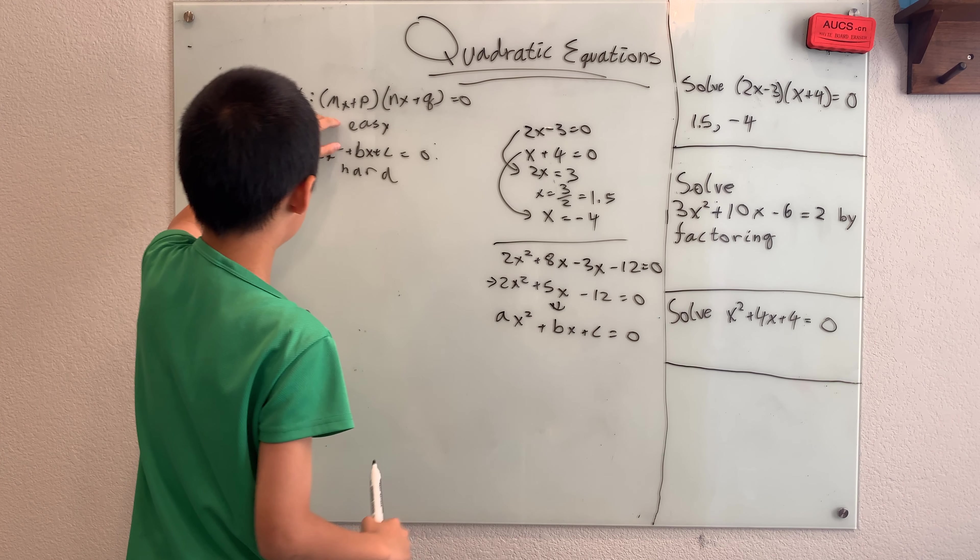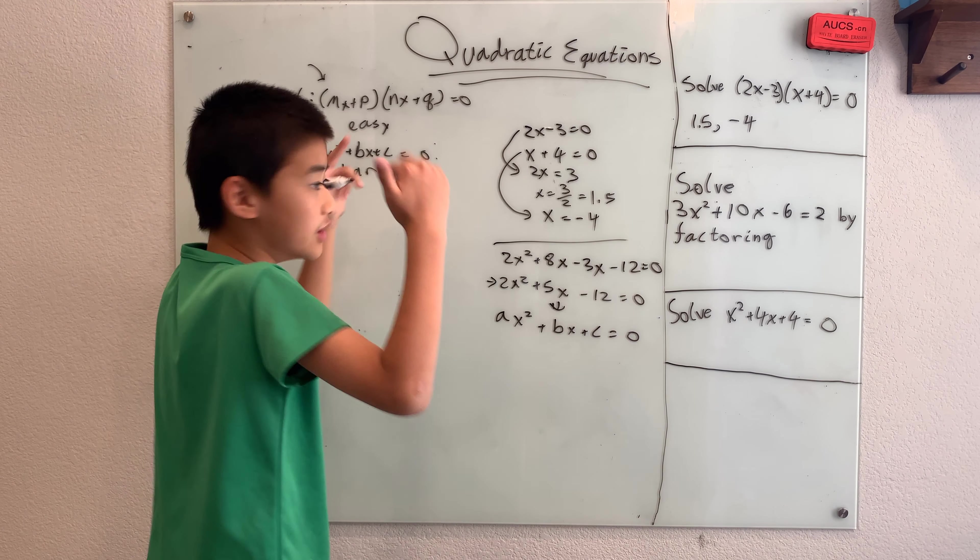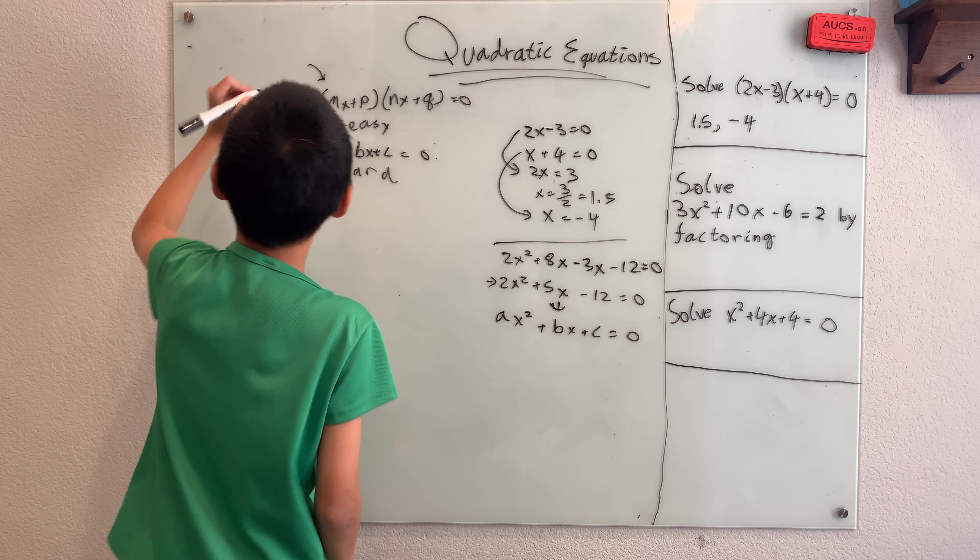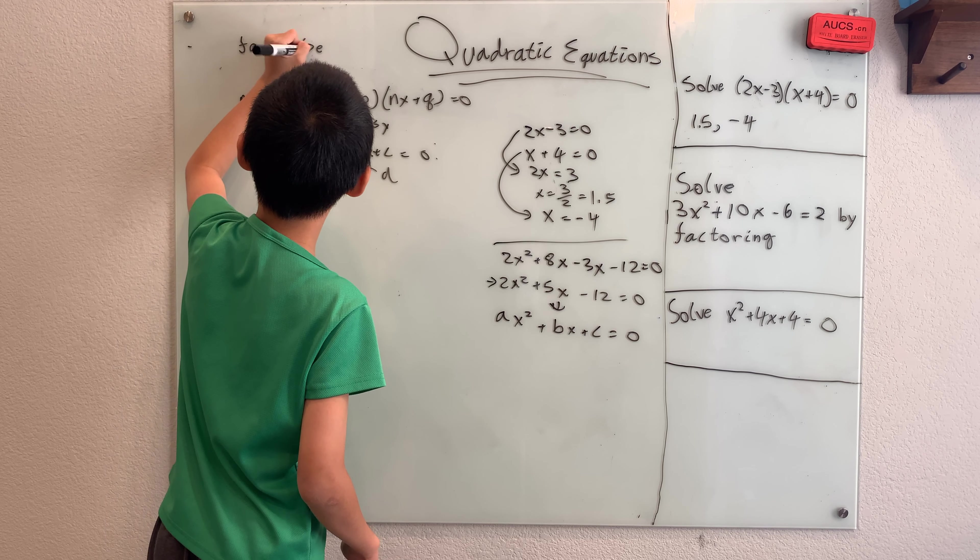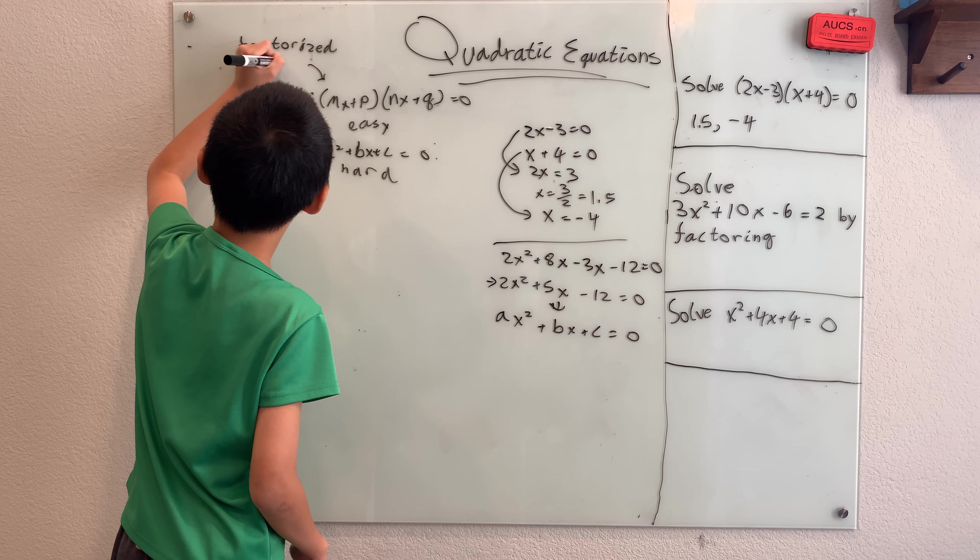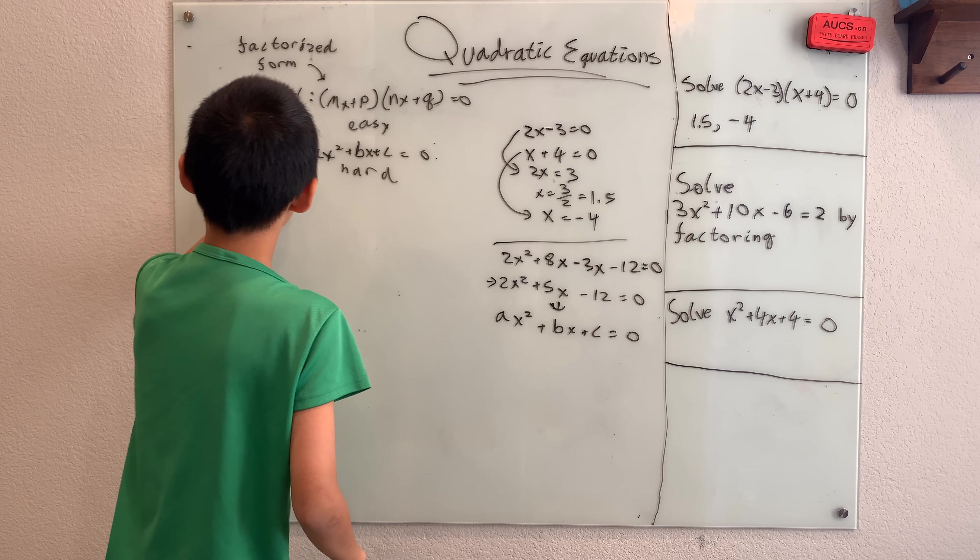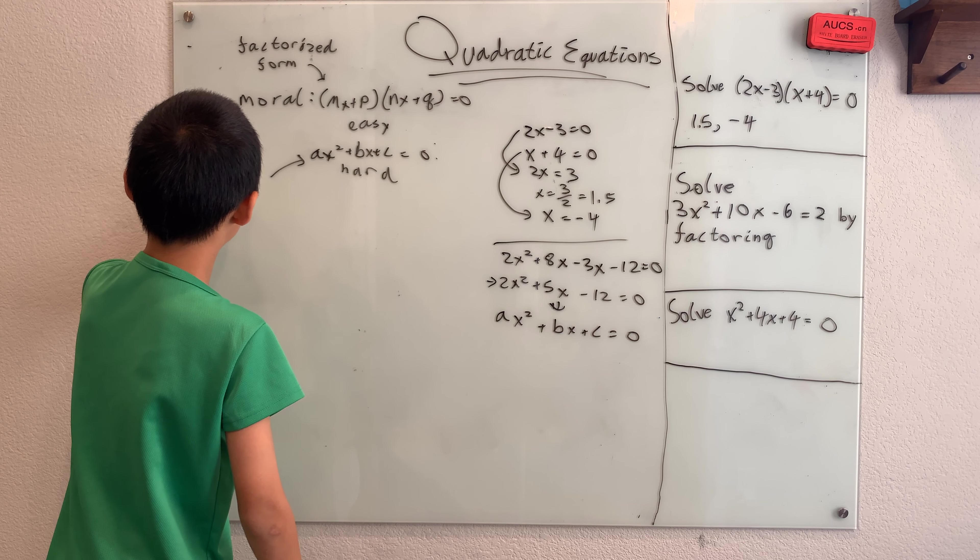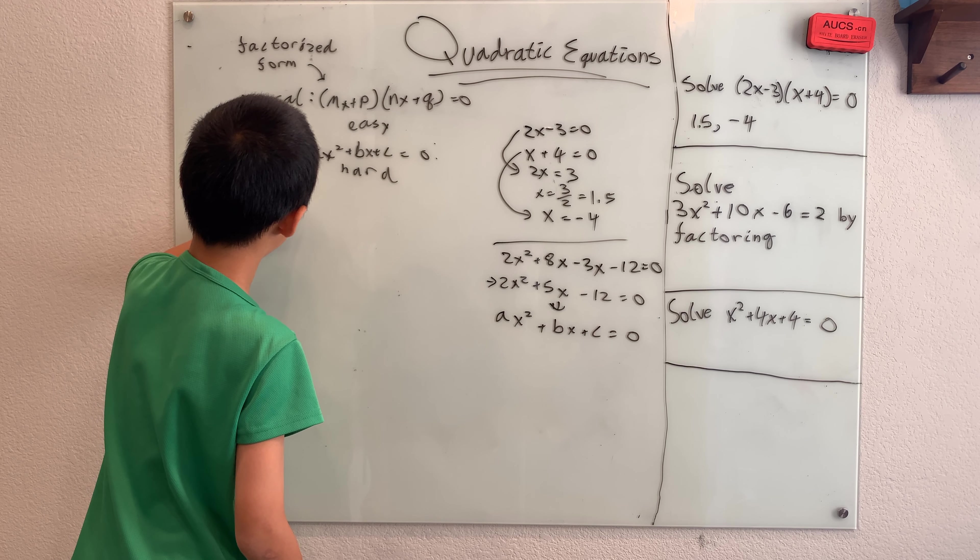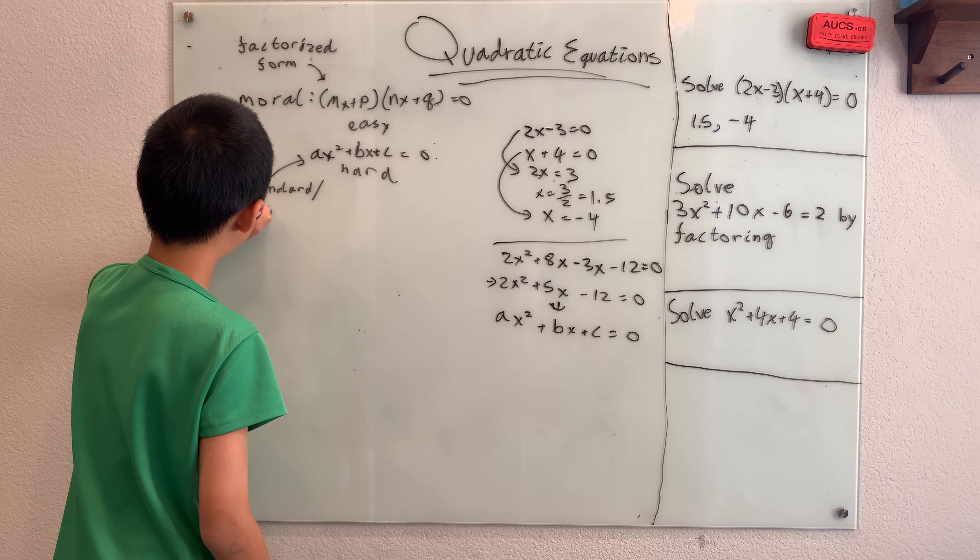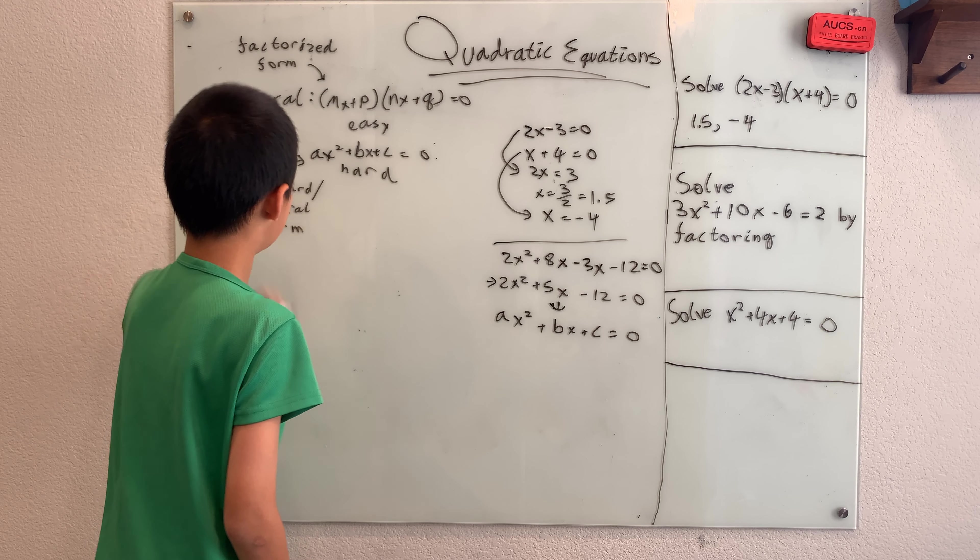and then you get ax squared plus bx plus c is equal to 0. This is hard to solve. So, well, if this and this is the same thing, well, one's easy and one's hard, so why not just turn this into this? This is called factorized form, which is where you have something that's easy, but this is called either standard or sometimes they're called general form.